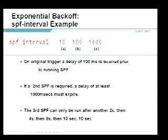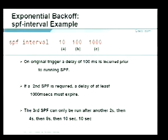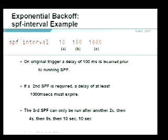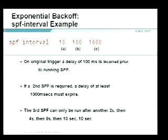Example: 'spf-interval 10 100 1000'. The first parameter (10) is seconds between consecutive SPFs — the maximum. Between trigger and first SPF, wait 100 milliseconds. For a second SPF trigger, the third parameter kicks in: wait 1000 milliseconds (one second). Next wait is four seconds, then eight seconds, eventually hitting ten seconds maximum. Subsequent SPFs wait the maximum ten seconds.